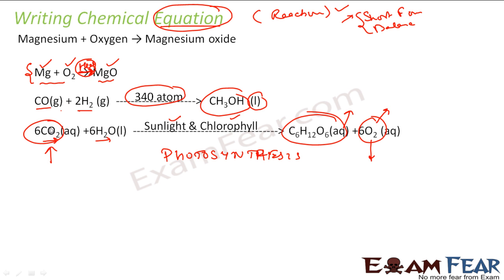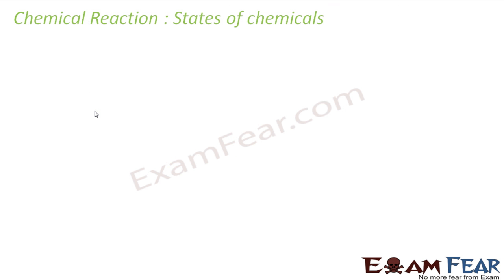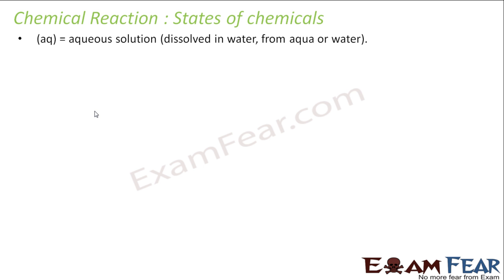What happens in a tree: it takes carbon dioxide and water, and in the presence of sunlight and chlorophyll — only during the day — the tree produces oxygen and this substance, which is nothing but food for the tree. This is a typical example of a chemical equation where we write everything in short form. We also write the state of each substance — for example, aqueous, liquid, or gas. Aqueous solution is something which is dissolved in water.